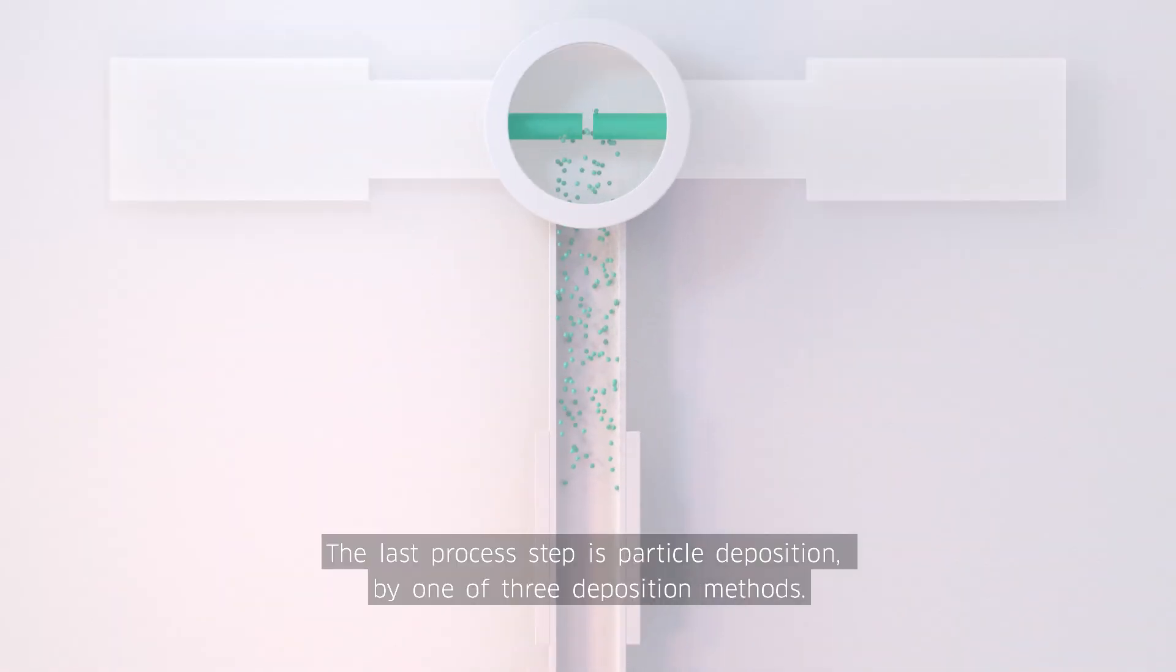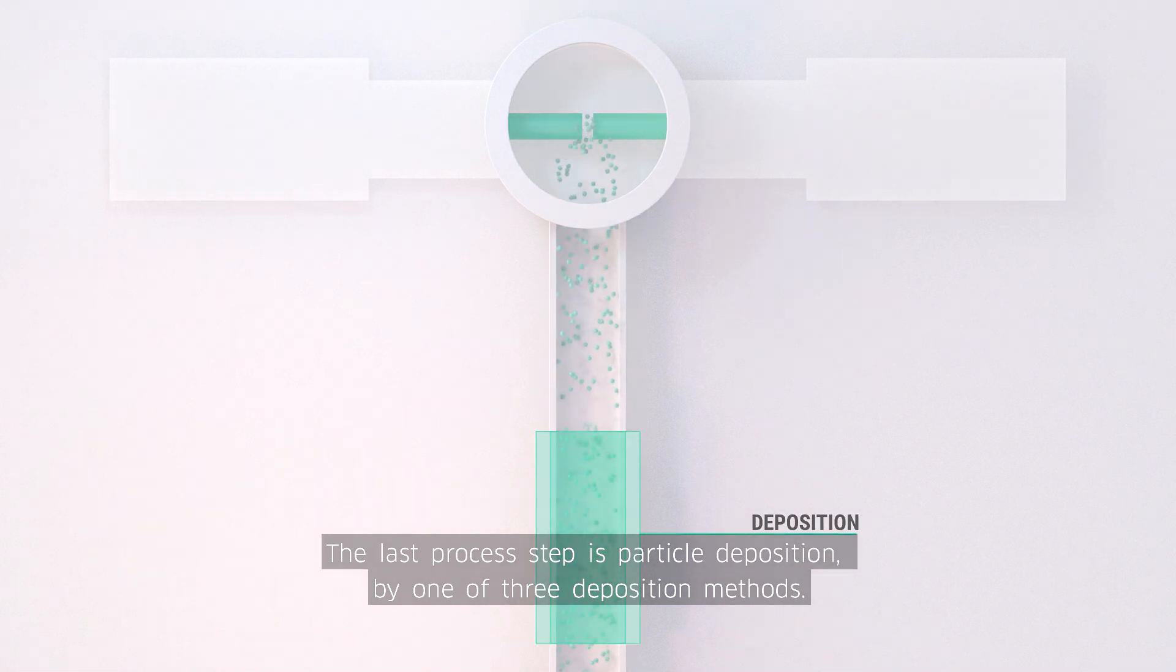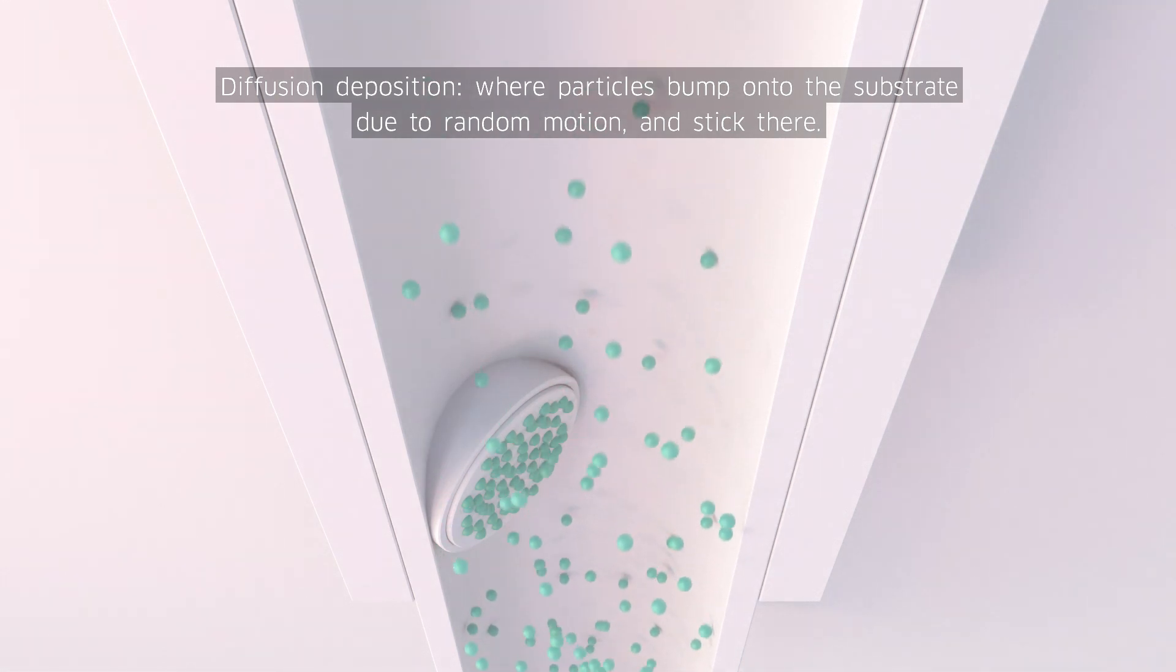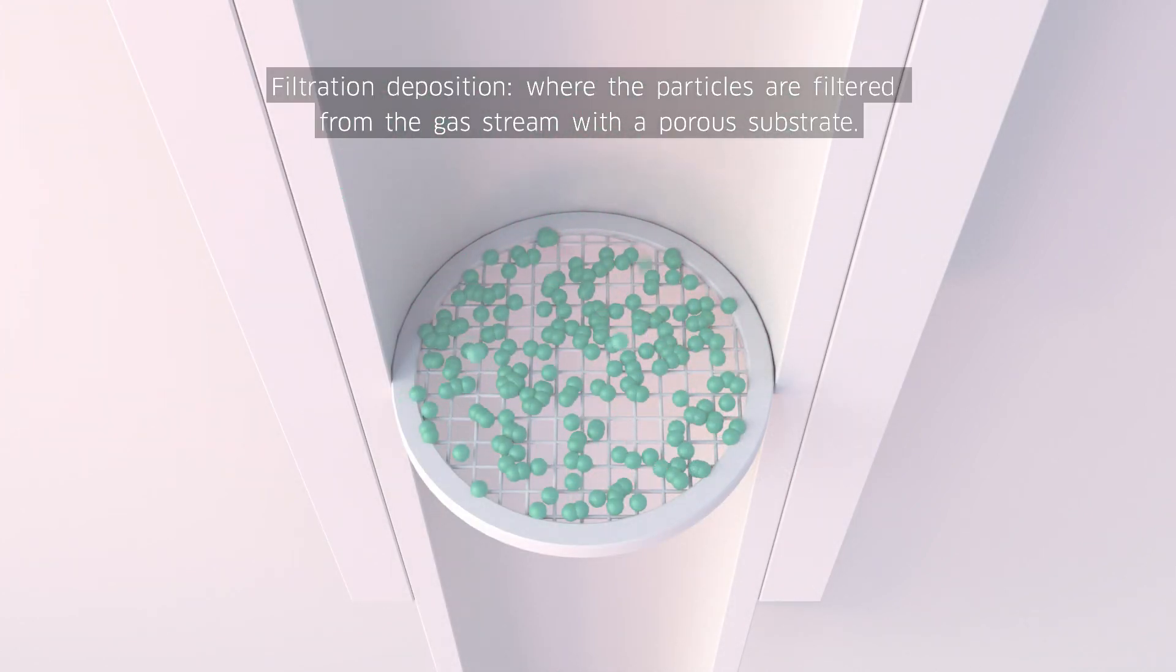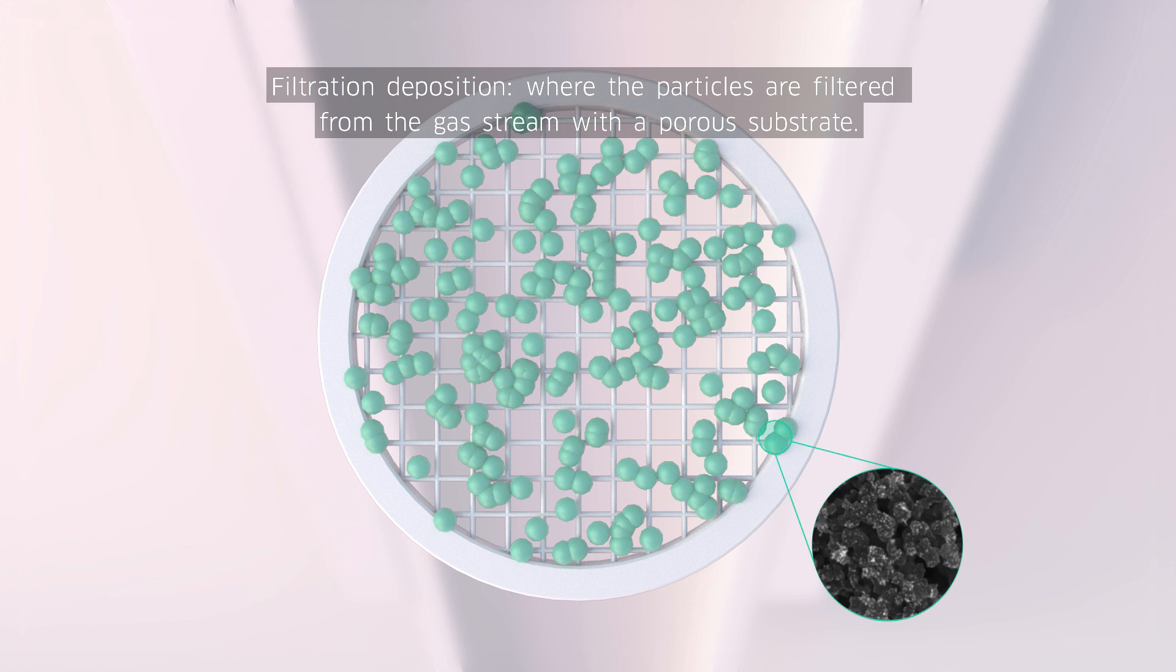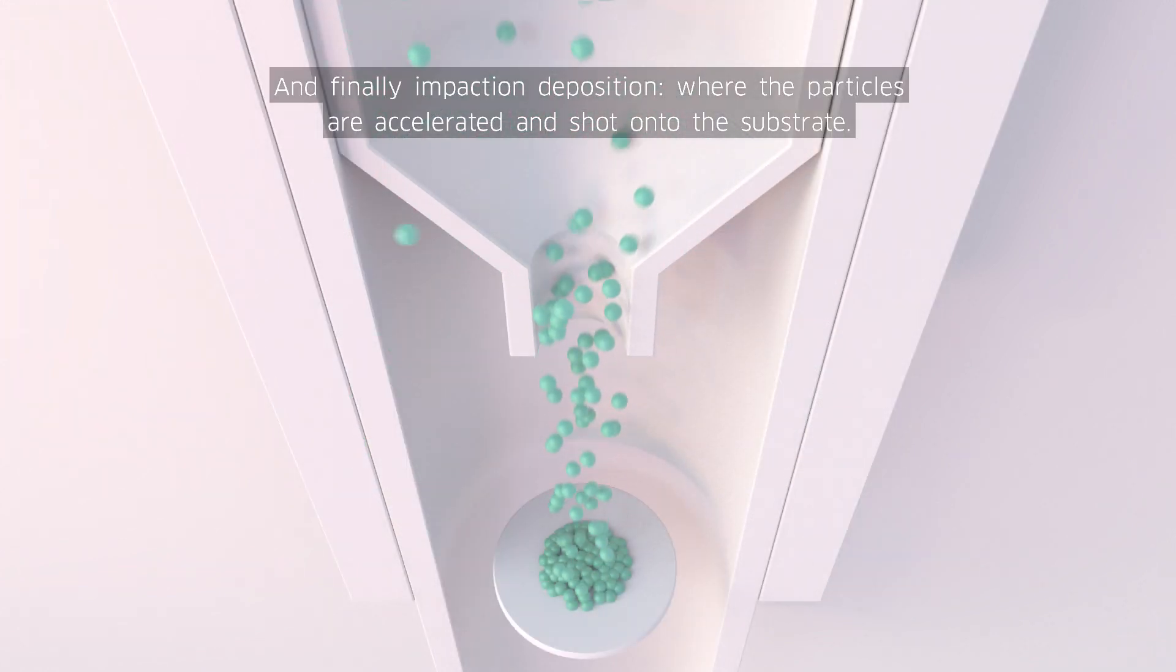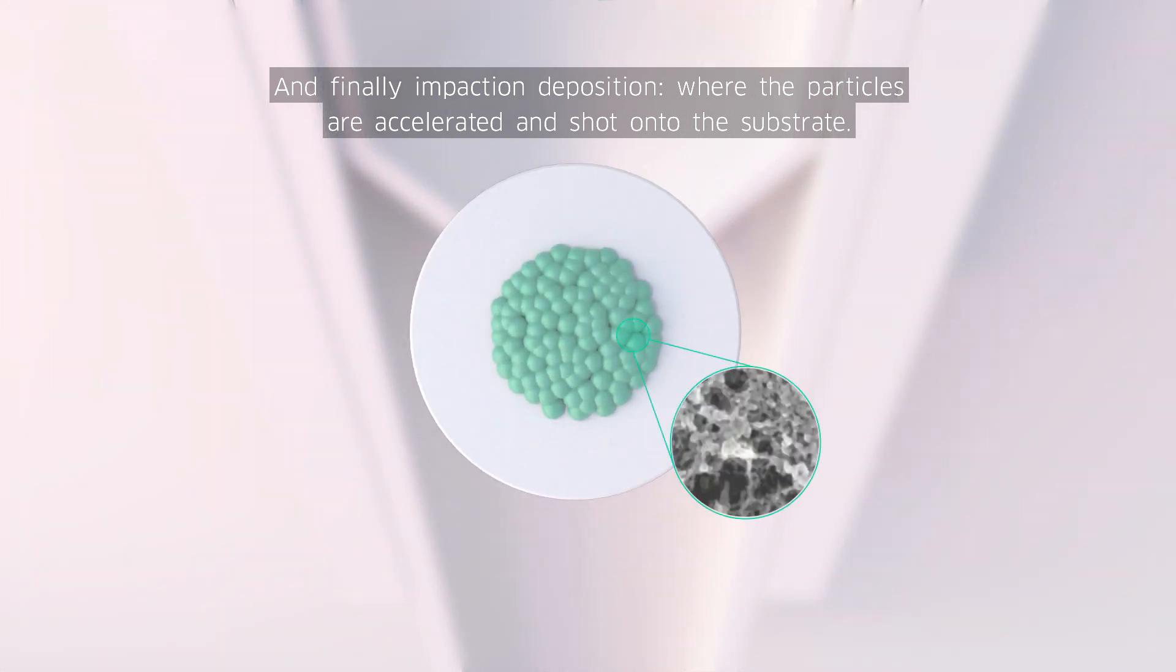The last process step is particle deposition by one of three deposition methods. Diffusion deposition, where particles bump onto the substrate due to random motion and stick there. Filtration deposition, where the particles are filtered from the gas stream with a porous substrate. And finally, impaction deposition, in which the particles are accelerated and shot onto the substrate.